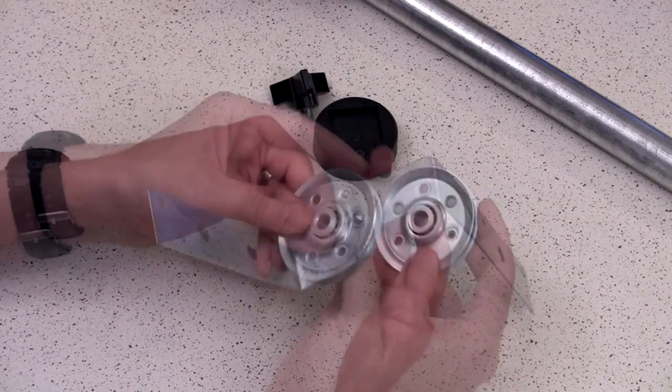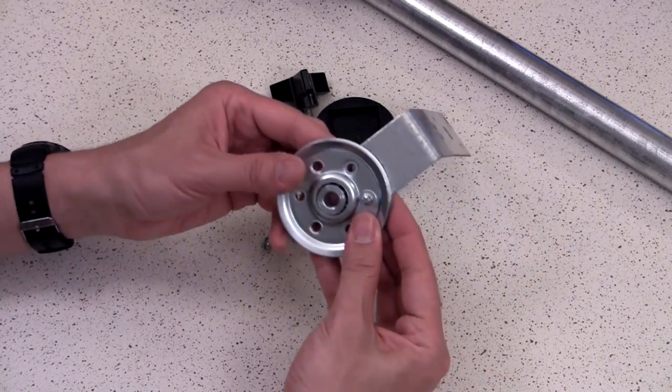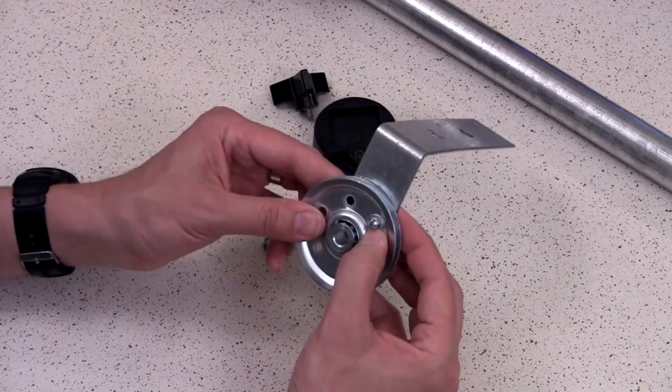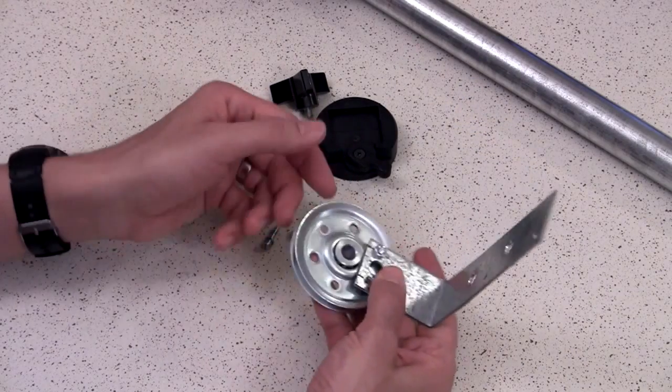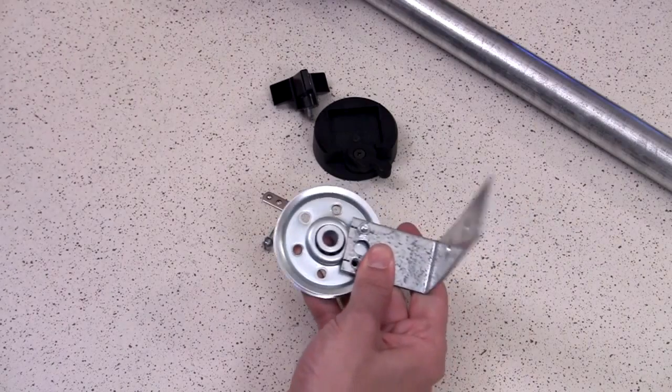The screw goes through a washer, through the joist, and then just attach it with a nut on the other side.